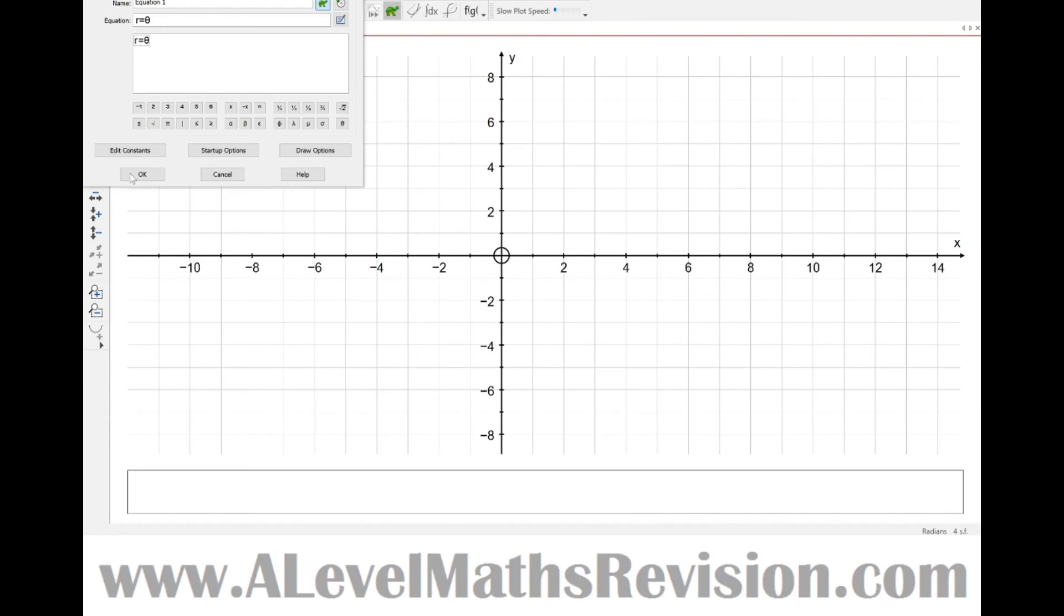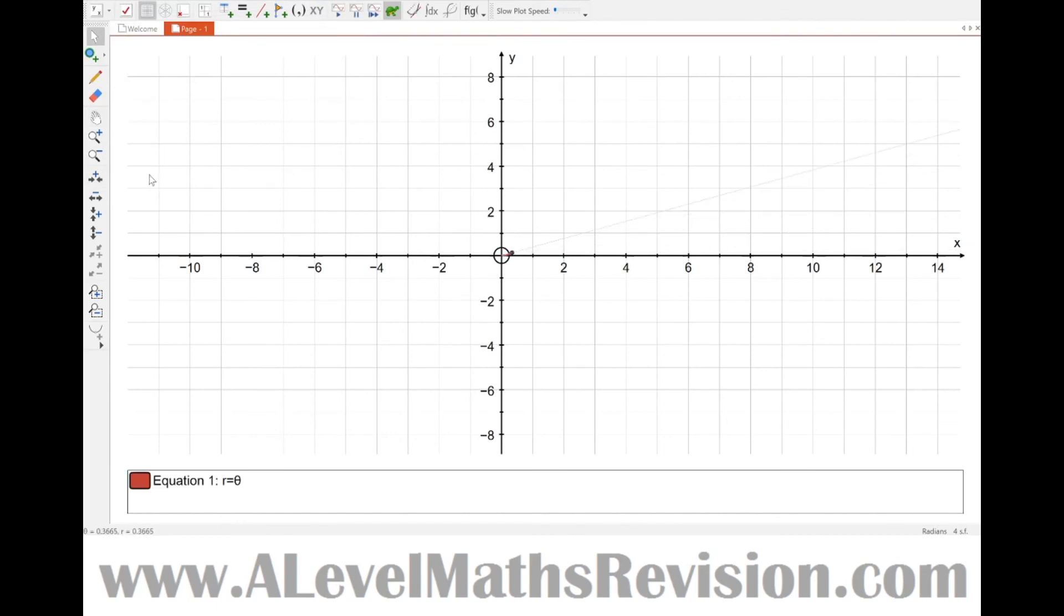So let's try r equals theta. We'll try and plot that. So the distance from the origin is exactly the same as the angle. Let's see that one go. We're going to get a spiral effect because the bigger the angle gets, the bigger the distance from the origin gets as well.